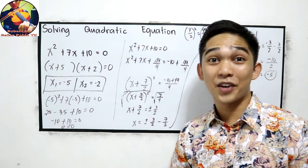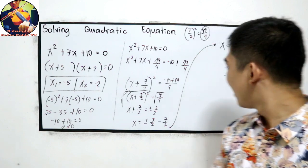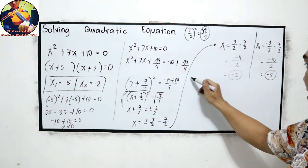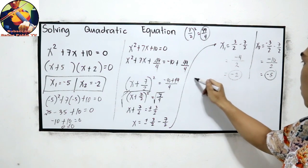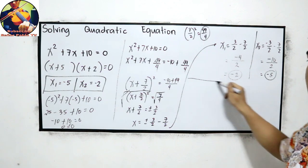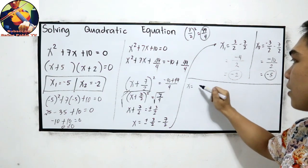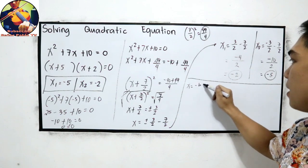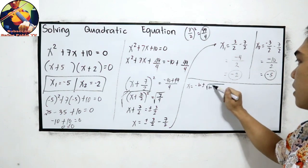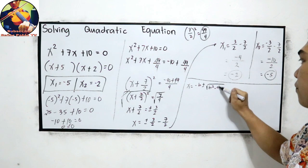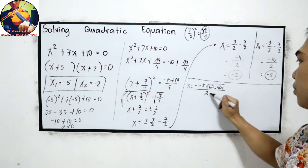How about our last method, the quadratic formula? Let's check. Our formula is x equals negative b, plus or minus the square root of b squared minus 4ac, all over 2a.